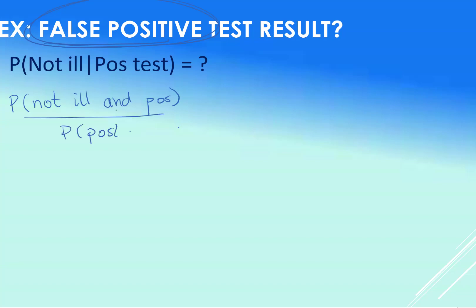And again, you get these, you get the not ill and positive off of your tree. And it turns out to be the following. Let's just have a look here. 0.01984. The odds of testing positive, 0.0276. This is a very high number.